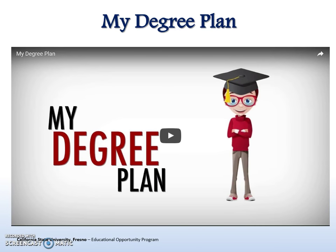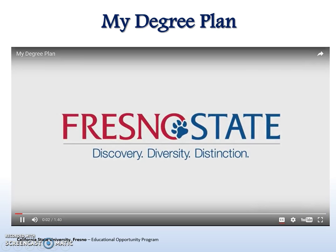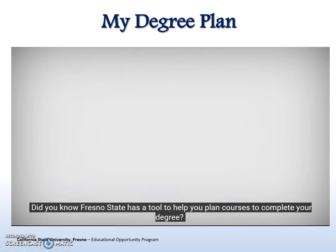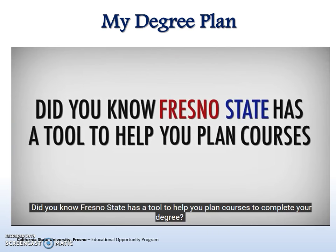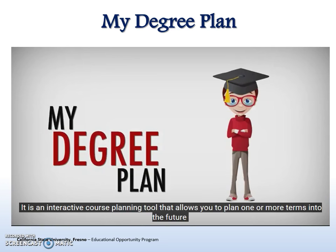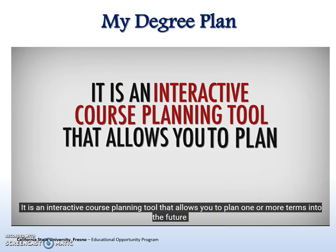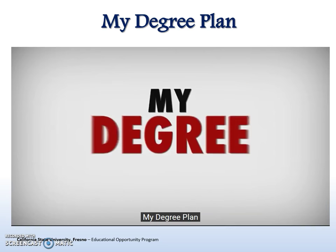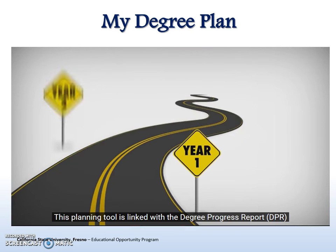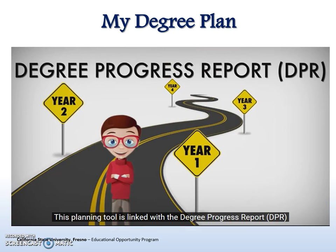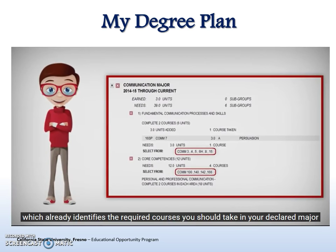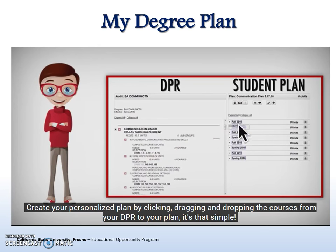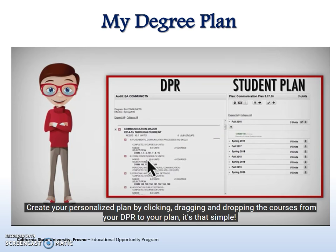Another useful tool that is now available to students is My Degree Plan, or Plans. It's an interactive course planning tool that allows you to plan one or more terms into the future. My Degree Plan is linked with the Degree Progress Report DPR, which already identifies the required courses you should take in your declared major. Create your personalized plan by clicking, dragging, and dropping the courses from your DPR to your plan.